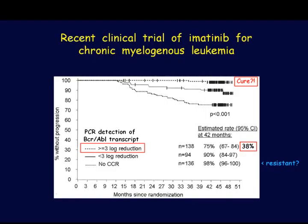When the imatinib data was presented — the fire marshal had to clear the room, so many people had gathered. A number of these CML patients were cured with this drug alone. We still treat with this drug; other drugs are available for relapse. We can use PCR to detect which patients are likely to be cured and which may require a different protein kinase inhibitor. This was a real success story that opened up the entire targeted therapy field.